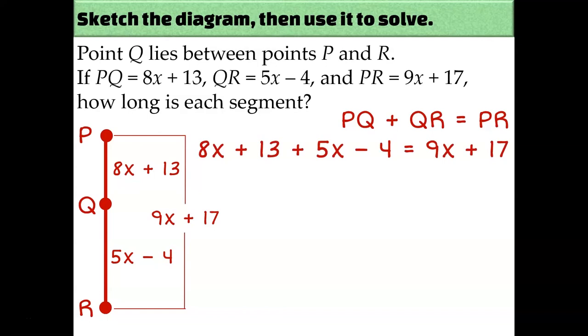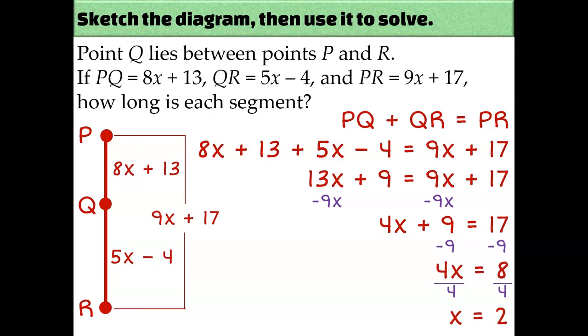Now let's combine like terms. 8x plus 5x is 13x, and 13 minus 4 is 9. Now I'll subtract 9x from both sides, then subtract 9 from both sides, and finally divide by 4. So I end up with an answer of x equaling 2. Now this part of the problem should be the easy part. You learned how to solve equations like this back in algebra 1. So this part should be the easy part, but that does not mean that you should rush through it. Take your time, make sure you're solving each step correctly. Just because this should be the easy part, doesn't mean that you should do it carelessly.